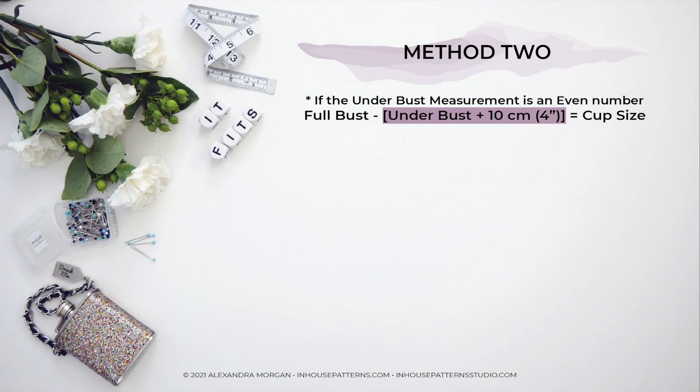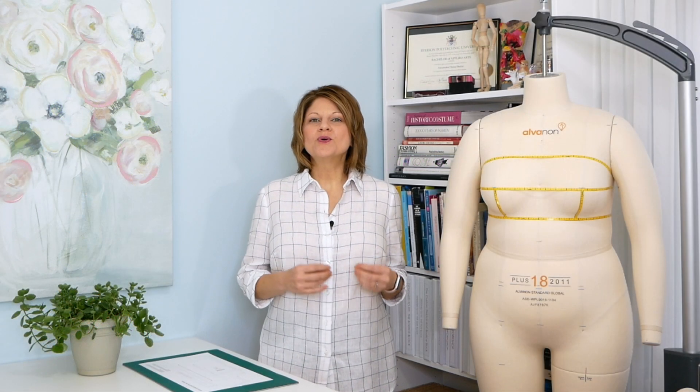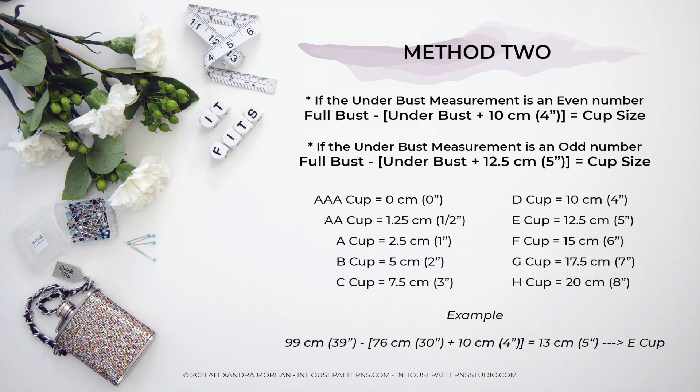Method two uses the full bust measurement and the under bust measurement. First, consider your under bust measurement: if it is an even number, add 10 centimeters to it; if it is an odd number, add 12.5 centimeters. If your under bust measurement lands between an even and an odd number, use the whole number before the decimal as your guide. Then subtract that result from your full bust measurement — the final result reveals your cup size.